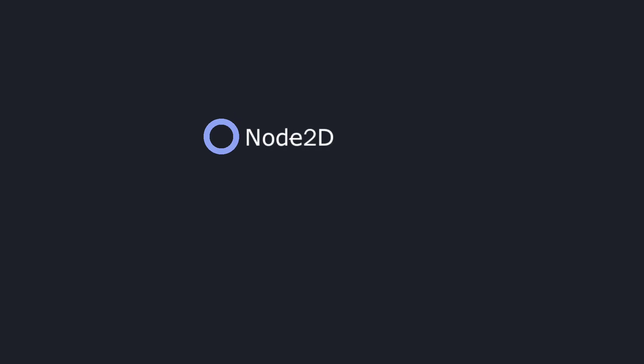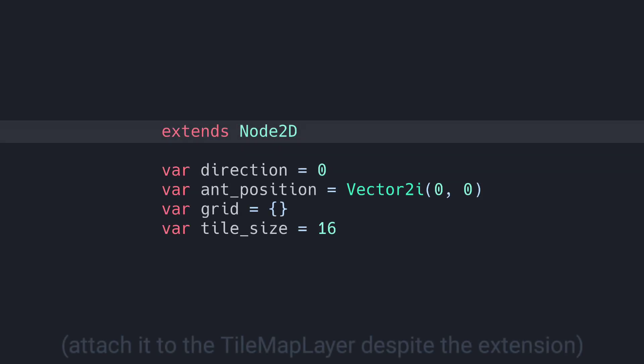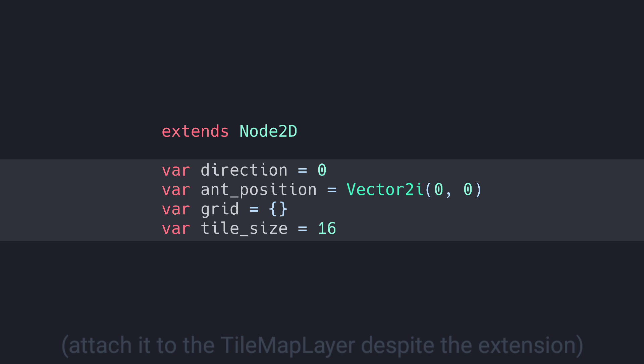Alright, let's fire up Godot and start building Langton's Ant. We'll create a Node2D as the root node of our scene. We'll also add a TilemapLayer node to handle our grid of tiles. Next, let's write a script that will control our ant — it extends the Node2D class, which is the base node we added earlier.